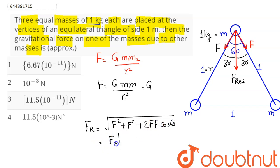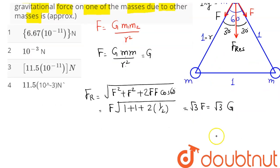This comes as F, so this is 1 plus 1 into 2 cos 60. Cos 60 is 1 by 2, hence this comes out to be root 3 F. So this is root 3 F. Magnitude we have calculated as G, with G as we know is given as 6.67 into 10 power minus 11.